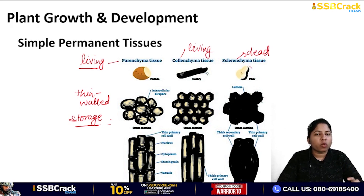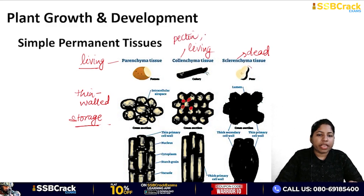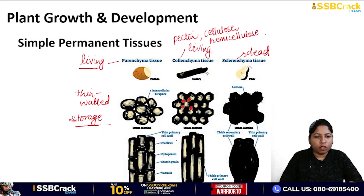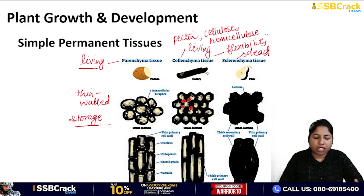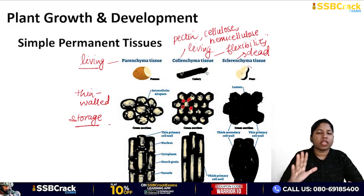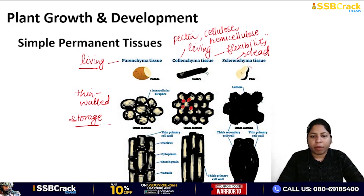Coming to colenchyma — the cells have thickening at the corners made of pectin, cellulose, and hemicellulose. Its function is to provide flexibility. You must have seen the money plant — its stem can easily coil around a support and grow. That flexibility in the stem of the money plant is provided by colenchyma.